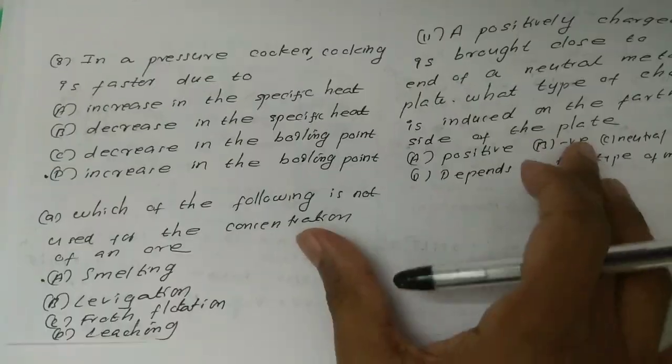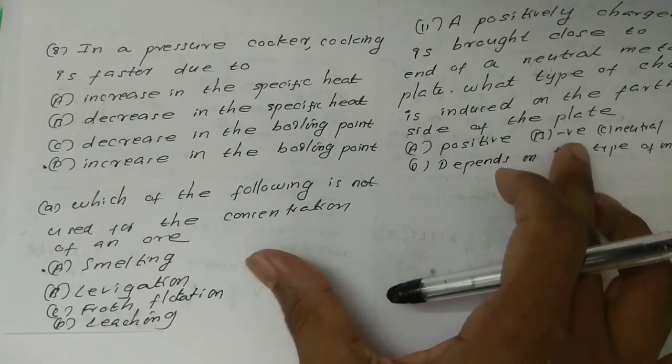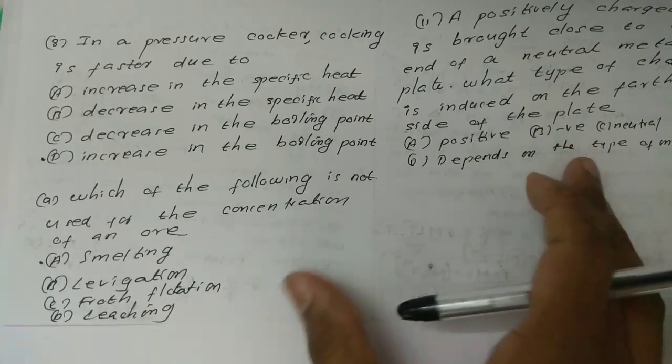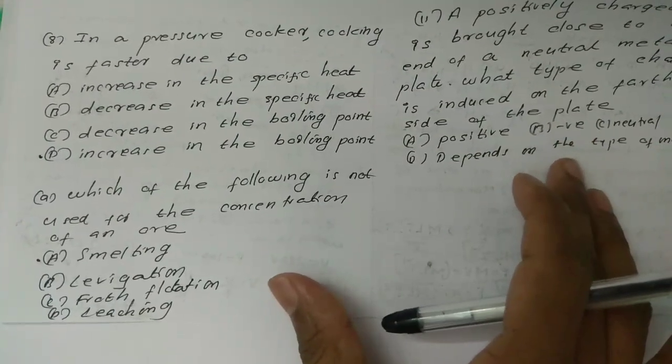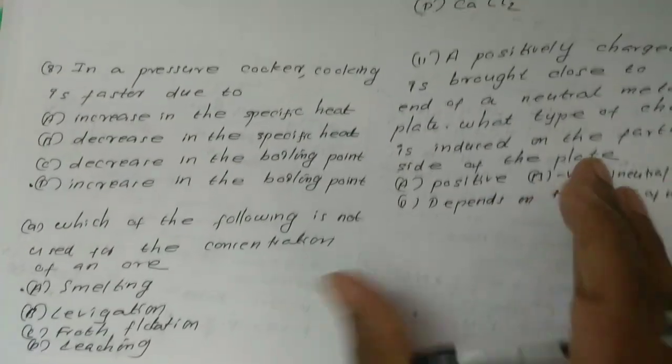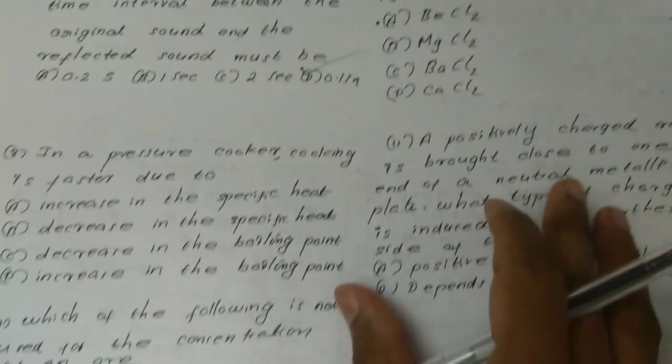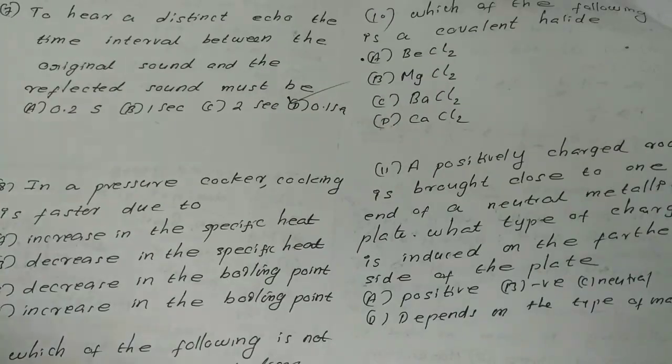Next question: A pressure cooker cooks food faster. Why is a pressure cooker faster?